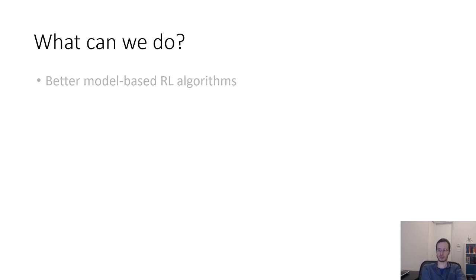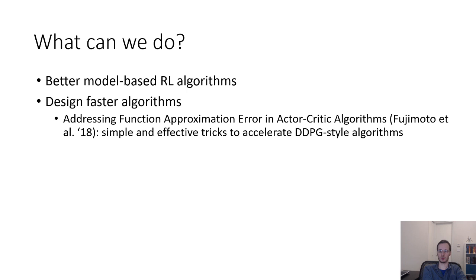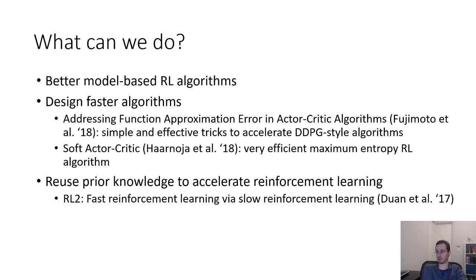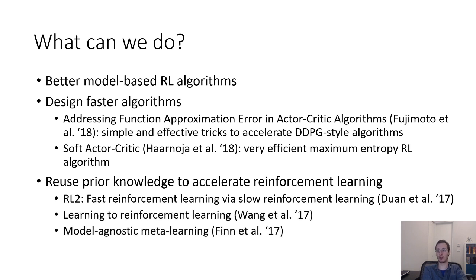What can we do if we want to deal with sample complexity? Well, we could try to develop better model-based RL algorithms. We can design faster algorithms in general. For example, in the world of off-policy reinforcement learning, there's been quite a bit of work with various tricks to accelerate DDPG-style algorithms. Soft actor-critic is a very efficient maximum entropy RL algorithm that's also off-policy. And in general, there's quite a bit of work in this area. We can also try to use prior knowledge to accelerate reinforcement learning. And we can do this in a variety of ways. We can do this with something as complex as meta-learning, such as the methods that I described in the previous meta-learning lecture. We can also think of reusing prior knowledge with offline reinforcement learning algorithms, like the ones that Aviral covered in his lecture. So methods that can use prior data, prior knowledge, other related tasks, and other sources of data and supervision to accelerate the reinforcement learning process can do a lot to mitigate these challenges with sample complexity.